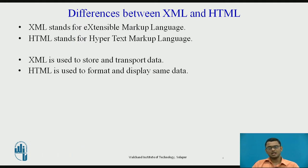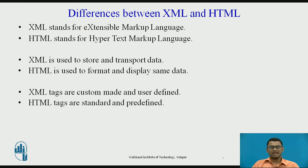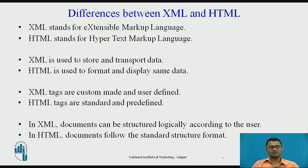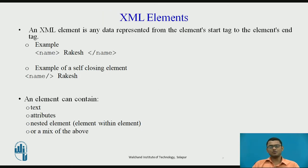The core differences between XML and HTML: HTML is used to format and display data, whereas XML is used to store and transport data. HTML tags are standard and predefined, whereas XML tags are custom-made — the programmer can define their own tags. In XML, documents can be structured logically according to the user's needs, whereas in HTML, documents follow a standard structure with no flexibility.